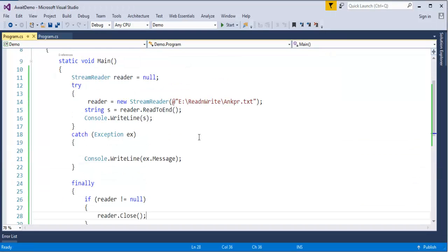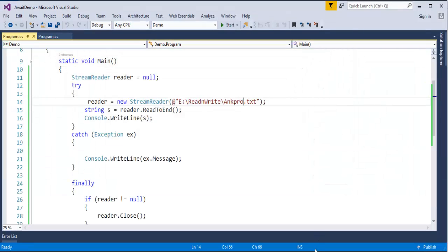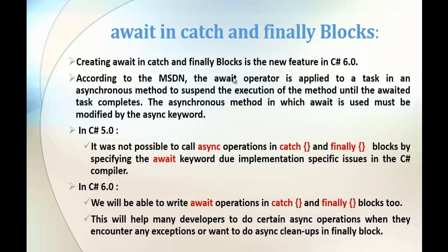In the finally block, if reader is not equal to null, then close the reader object. Running the program gives me a message like 'could not find the file' with the path. When I give the correct file name and run the application, it prints 'AncPro'. Now, our objective is to learn await in catch and finally blocks. According to MSDN, the await operator is applied to a task in an asynchronous method to suspend the execution of the method until the awaited task completes. The async method in which await is used must be modified by the async keyword.